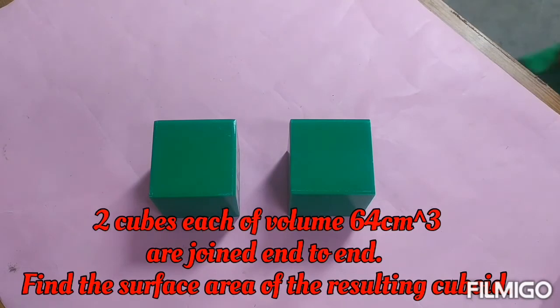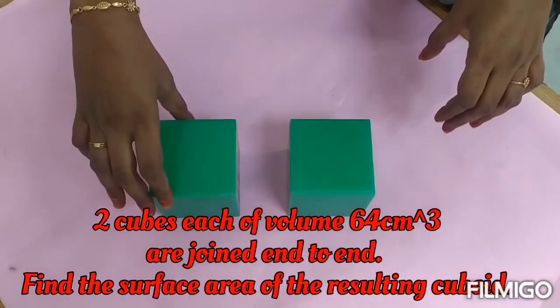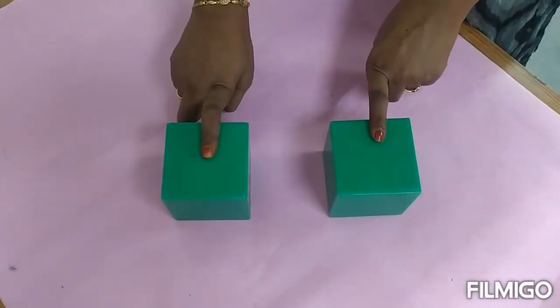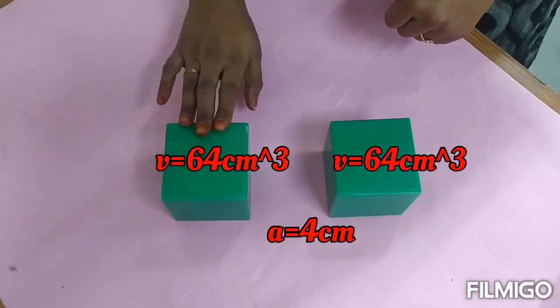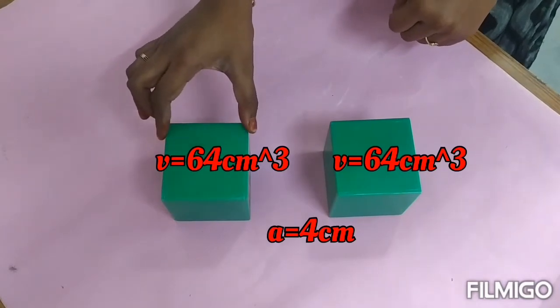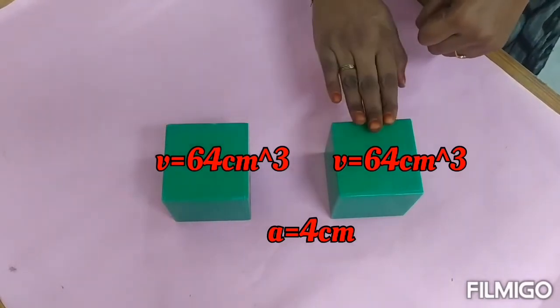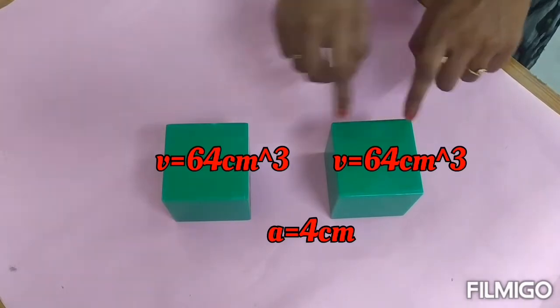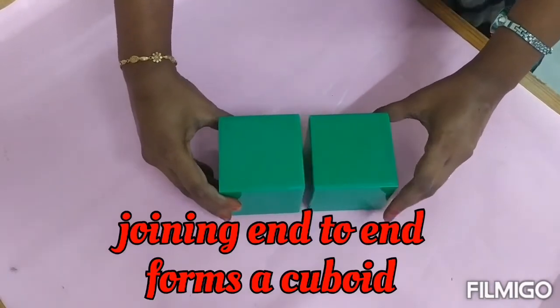Two cubes each of volume 64 cm³ are joined end to end. Find the surface area of the resulting cuboid. We have two cubes each of volume 64 cm³. We know that volume of cube is nothing but a³. So what will be the side of these cubes? Side is equal to cube root of the volume, that is cube root of 64. Cube root of 64 is nothing but 4. So each cube will be of side 4 cm.